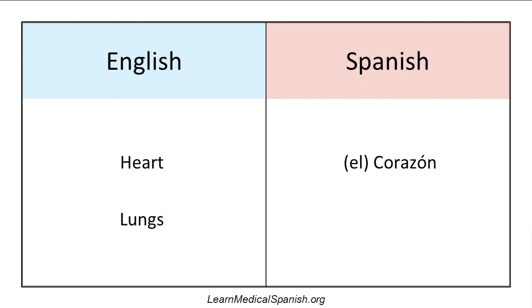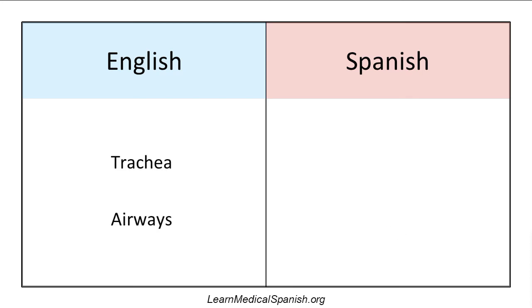Lungs — los pulmones. For bonus points, how do you say lung singular? El pulmón. Trachea — and hint, this is a cognate. Cognates mean something that sounds similar in both languages, so it'll sound similar, you just have to pronounce it the Spanish way. La tráquea.